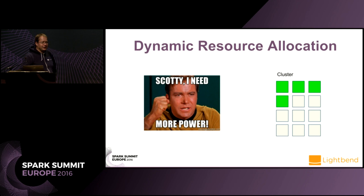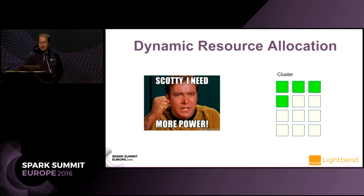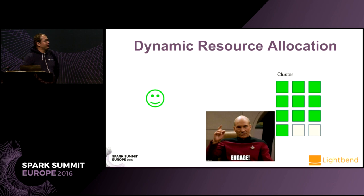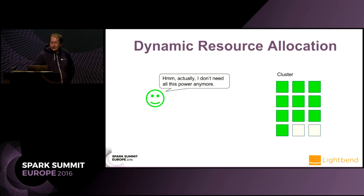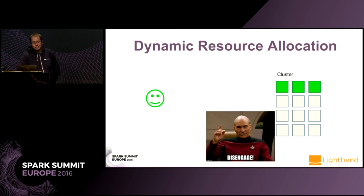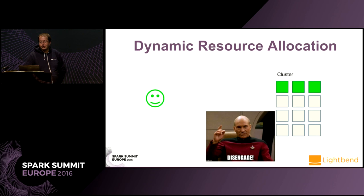At some point the job detects that it could do with way more resources, so it asks the cluster for more. The cluster is not busy, so it agrees and gives the application more resources. Now the process has a lot of resources and goes very fast, able to do its computation as fast as it can. But after a while it starts to see that it doesn't really need all those resources anymore, so it tells the cluster it doesn't need them, and the cluster frees up resources so other jobs can use them.